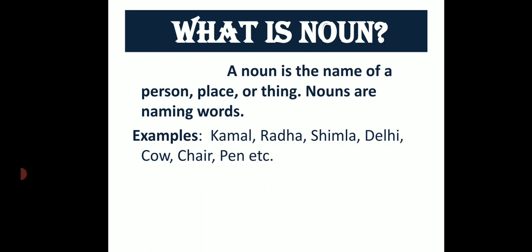What is noun? Sangya kya hai? A noun is the name of a person, place or thing. Nouns are naming words. Kisi vyakti, sthana, ya vastu ke naam ko Sangya kehte hai. Sangya naam wale shabd hote hai.